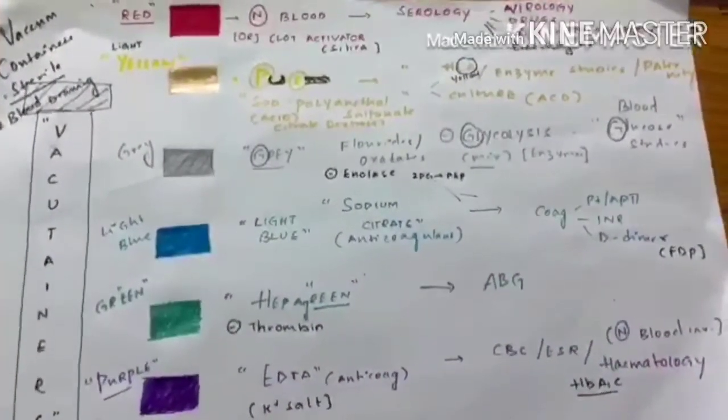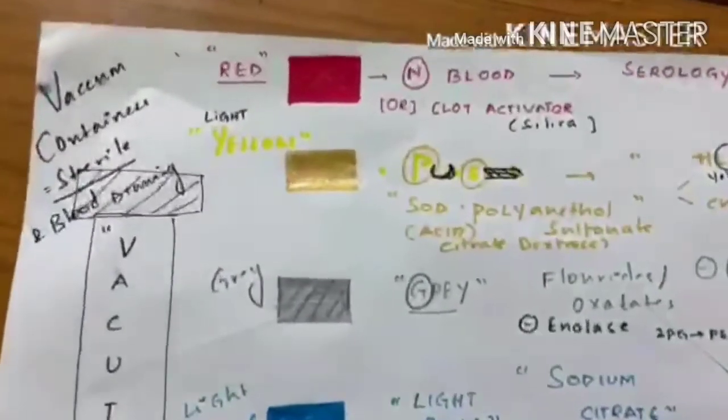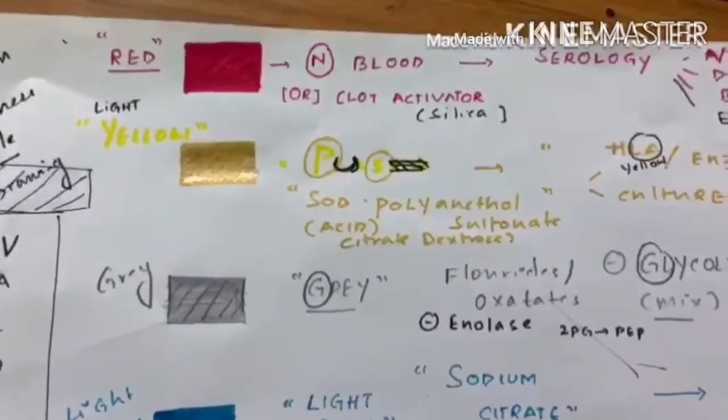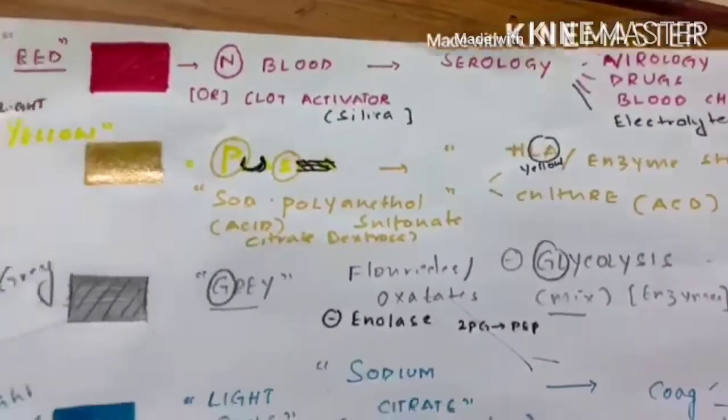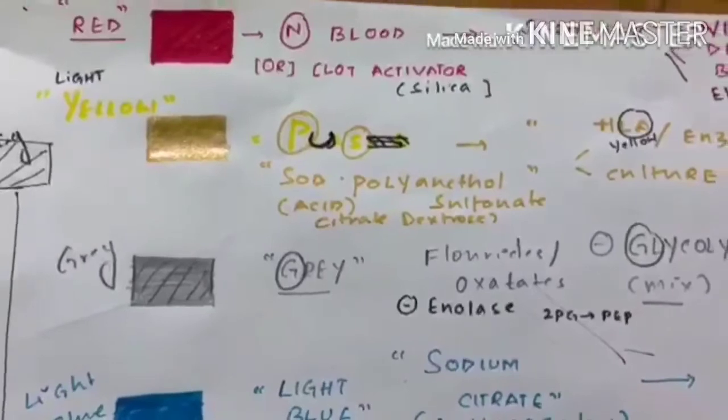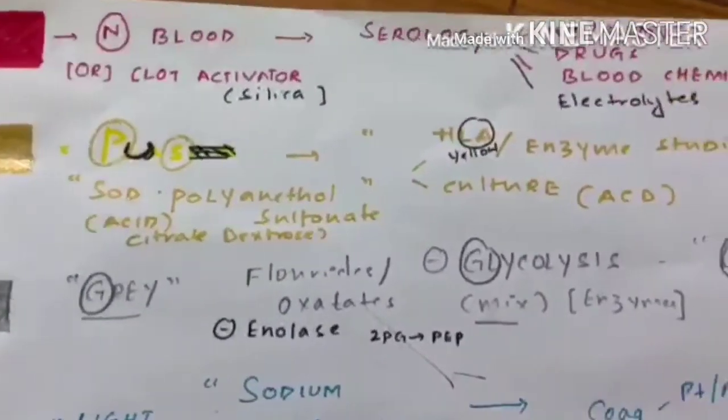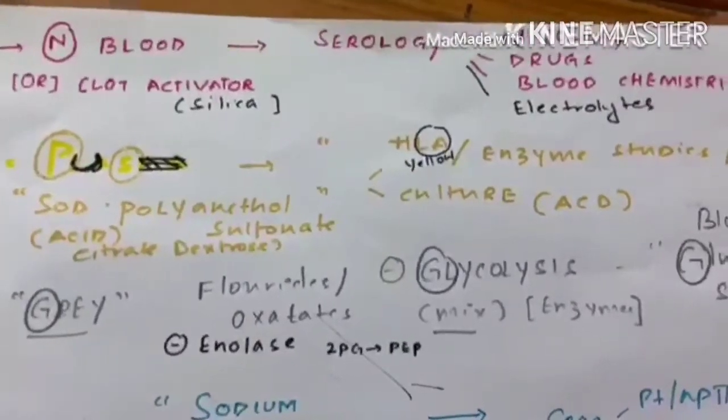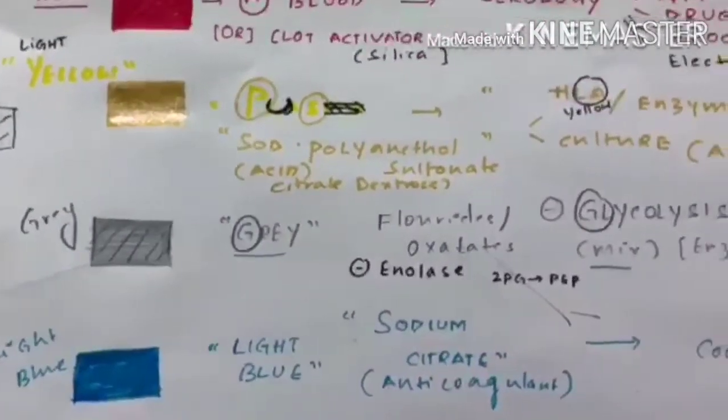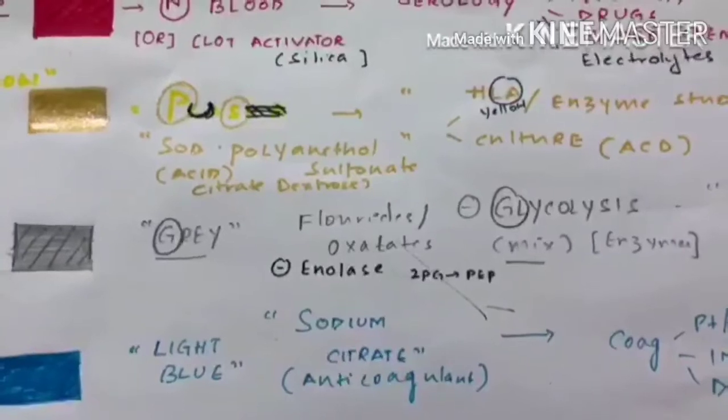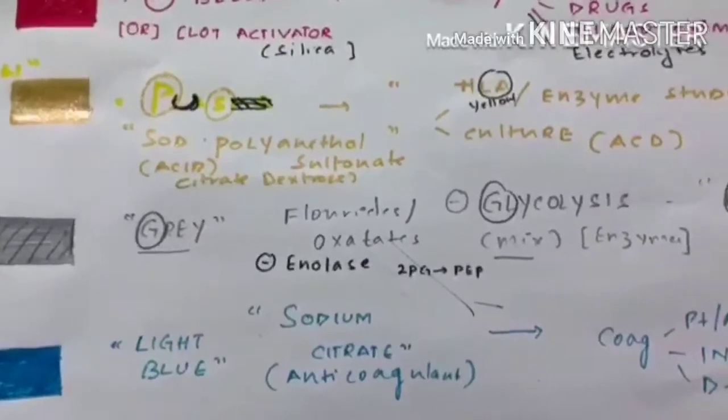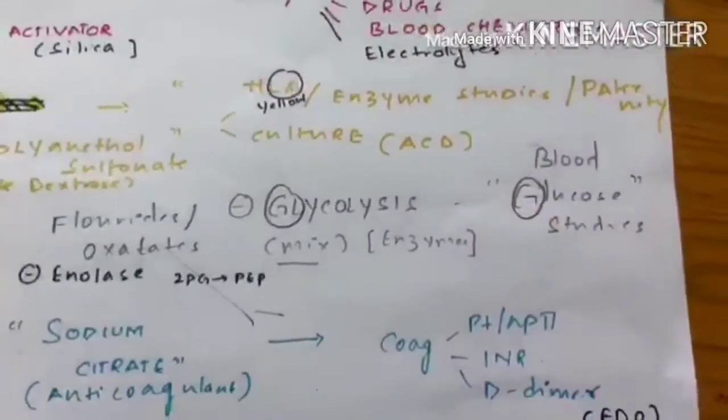Let me summarize each bottle in three words. Red bottle: red is normal blood color, contains normal blood or clot activator, useful for serological investigations. Yellow represents pus: pus for SPS sodium polyanethyl sulfonate, useful for culture and HLA. Next grey bottle: G for glucose, G for glycolysis. Grey bottle contains glycolysis inhibitor which is sodium fluoride, useful for blood glucose studies.